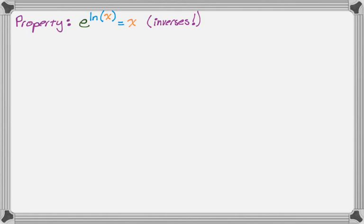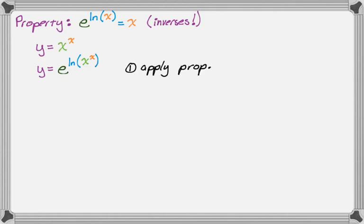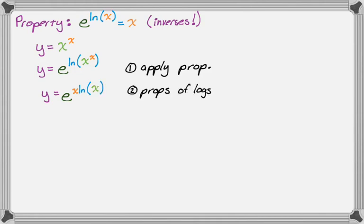So let's see how this property can help us. Again, we start with y equals x to the x. Applying this property to the right-hand side, y is equal to e to the natural log of x to the x. Then using the exponents-become-coefficients property, y equals e to the x times natural log of x.